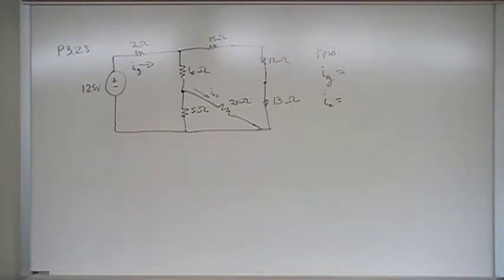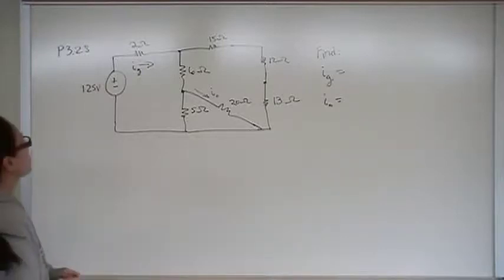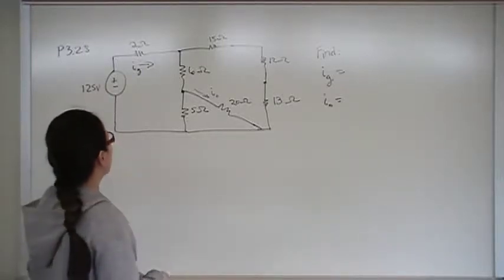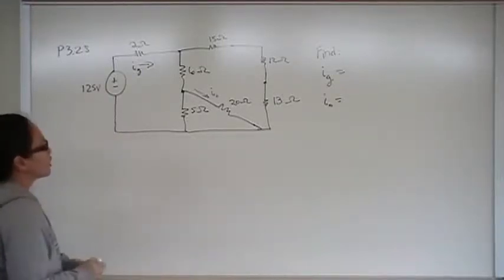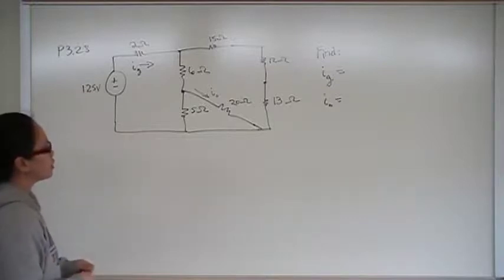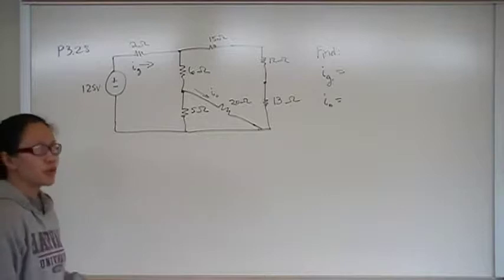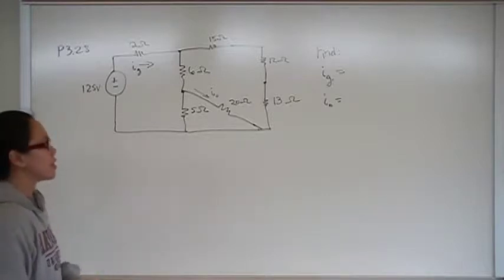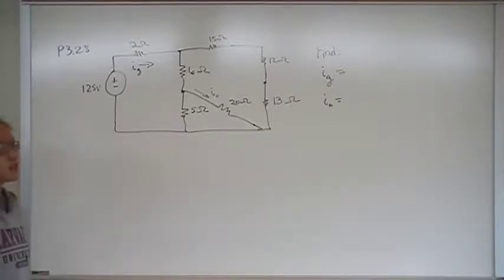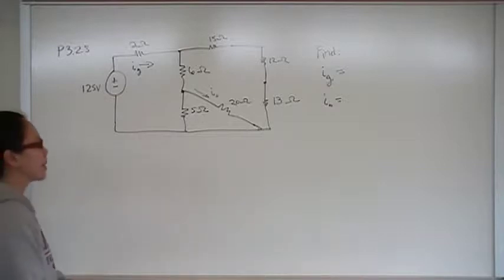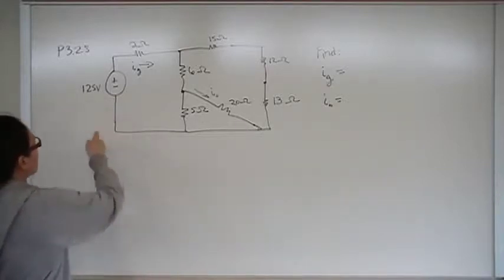Hey you guys, this is problem number 28 from chapter 3 of voltage division and current division. We have a circuit that doesn't look like our normal circuit, but you'll see it's actually just a fancy way of expressing a circuit you've probably seen many times. This is a 125 volt independent voltage source.